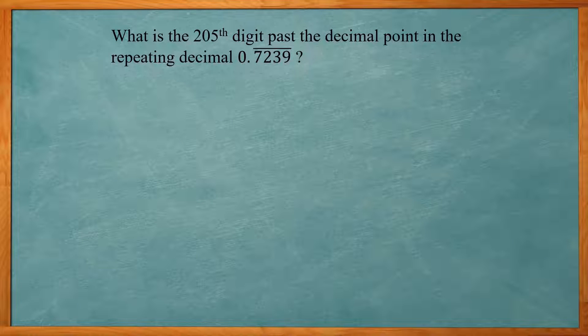This problem says what is the 205th digit past the decimal point in the repeating decimal 0.7239?